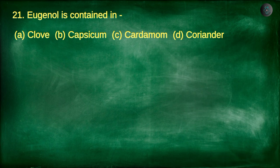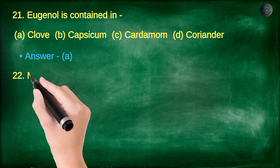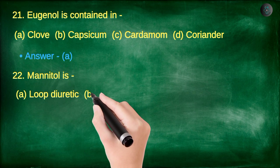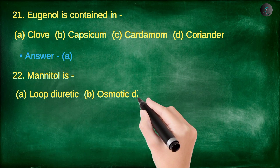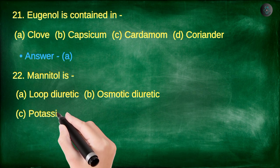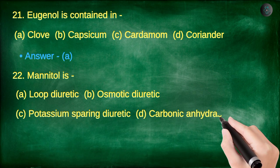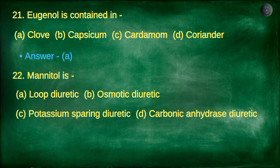Next question. Mannitol is: A. Loop diuretic, B. Osmotic diuretic, C. Potassium sparing diuretic, D. Carbonic anhydrase diuretic.